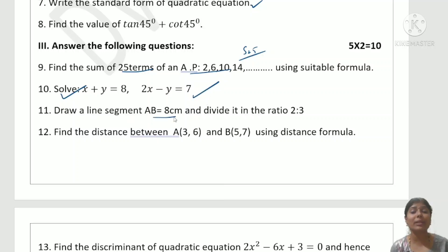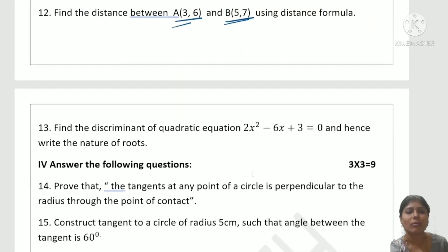Draw a line segment 8 cm and divide it in the ratio 2:3. That's construction. Find the distance between two points using the distance formula. Find the discriminant of quadratic equation 2x² - 6x + 3 = 0, and write the nature of roots.